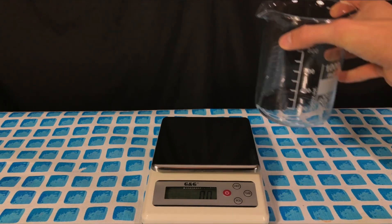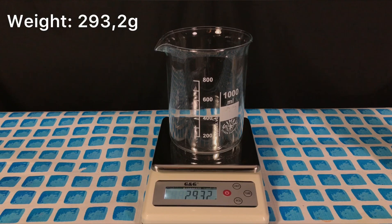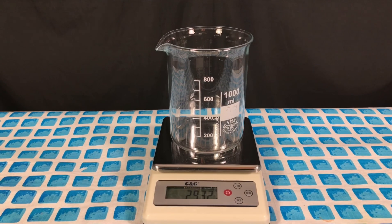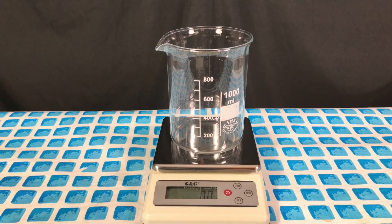We then start off by weighing an empty beaker. This way determining the yield later on will be easier. The scale was set to zero. 84 grams of sodium bicarbonate were then weighed out.